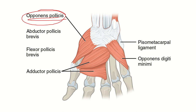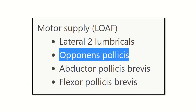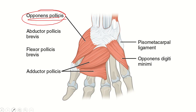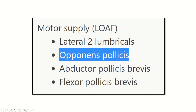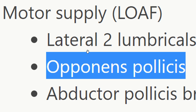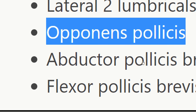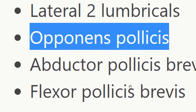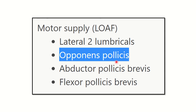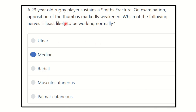We can see here the opponens pollicis, which is responsible for opposition of the thumb. The nerve supply from the median nerve to the hand muscles covers the lateral two lumbricals, opponens pollicis, abductor pollicis brevis, and flexor pollicis brevis. So it is the median nerve that supplies the opponens pollicis and is responsible for opposition of the thumb. Our final answer is the median nerve. Thank you.